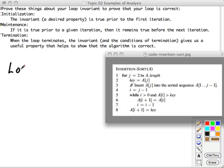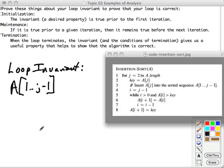So the loop invariant for insertion sort will be that the subarray from the beginning to some position, and I'm going to say J minus 1, is the elements from the original array of that range, but now they are in sorted order.